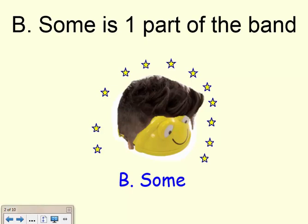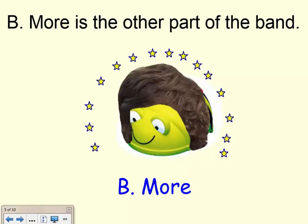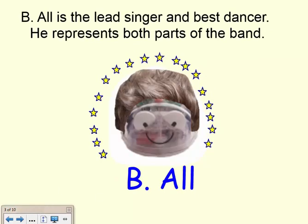Our first one up is B'sum, who is one part of the band. Next up is B'more. He is the other part of the band. And last but not least is B'all. He is the lead singer and the best dancer. He represents both parts of the band.